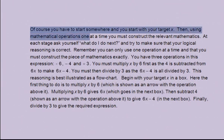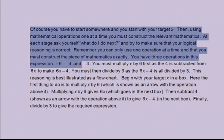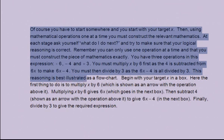Then, using mathematical operations one at a time, you must construct the relevant mathematics. At each stage, ask yourself, what do I do next and try to make sure that your logical reasoning is correct. Remember, you can only use one operation at a time and you must construct the piece of mathematics exactly. You have three operations in this expression, multiply by 6, subtract 4 and divide by 3. You must multiply x by 6 first as the 4 is subtracted from 6x to make 6x minus 4. You must then divide by 3 as the 6x minus 4 is all divided by 3. This reasoning is best illustrated as a flowchart.